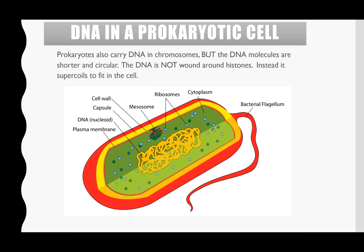In comparison, in prokaryotic cells, the DNA is still a chromosome, but it is much shorter — much less DNA. Instead of being a linear structure, it is circular. The DNA is much shorter and circular instead of linear. Because it's much shorter, it's not wrapped around histone proteins — it's not protein-bound. Instead, it just supercoils to fit into the cell. There's no nucleus in a prokaryotic cell, so it's not within a nucleus — it's free within the cytoplasm.